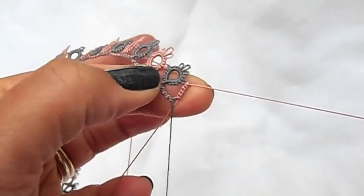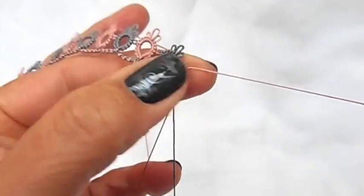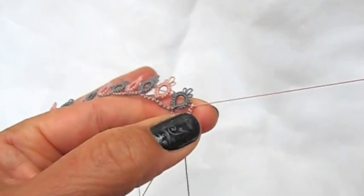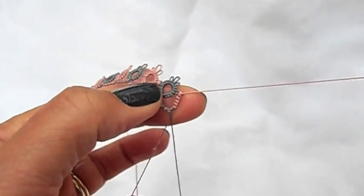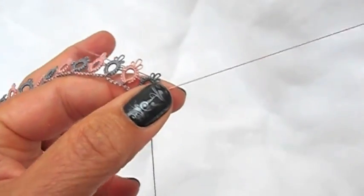Pull that nice and taut. Make sure there's no loose threads, and then carry on with the first half of the next double stitch. So the join doesn't count as a half.